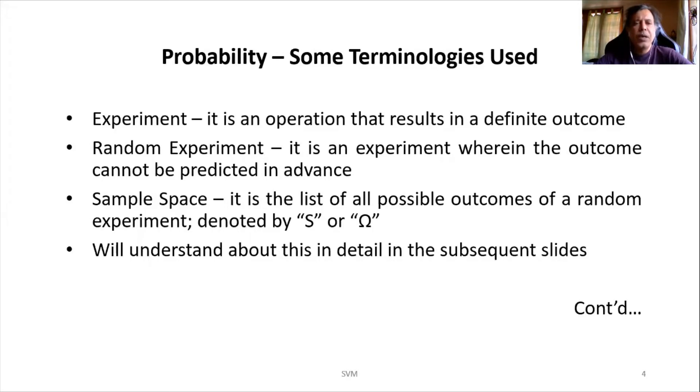Then there is one more nomenclature called random experiment. What is a random experiment? It is basically an experiment wherein the outcome cannot be predicted in advance. Same example of tossing a coin itself we can consider. Even though I know that definitely an outcome will be there—either a tail or a head—but I'm not sure what will come, whether head will come or tail will come, cannot be predicted in advance. So the tossing of coin can also be considered as a random experiment.